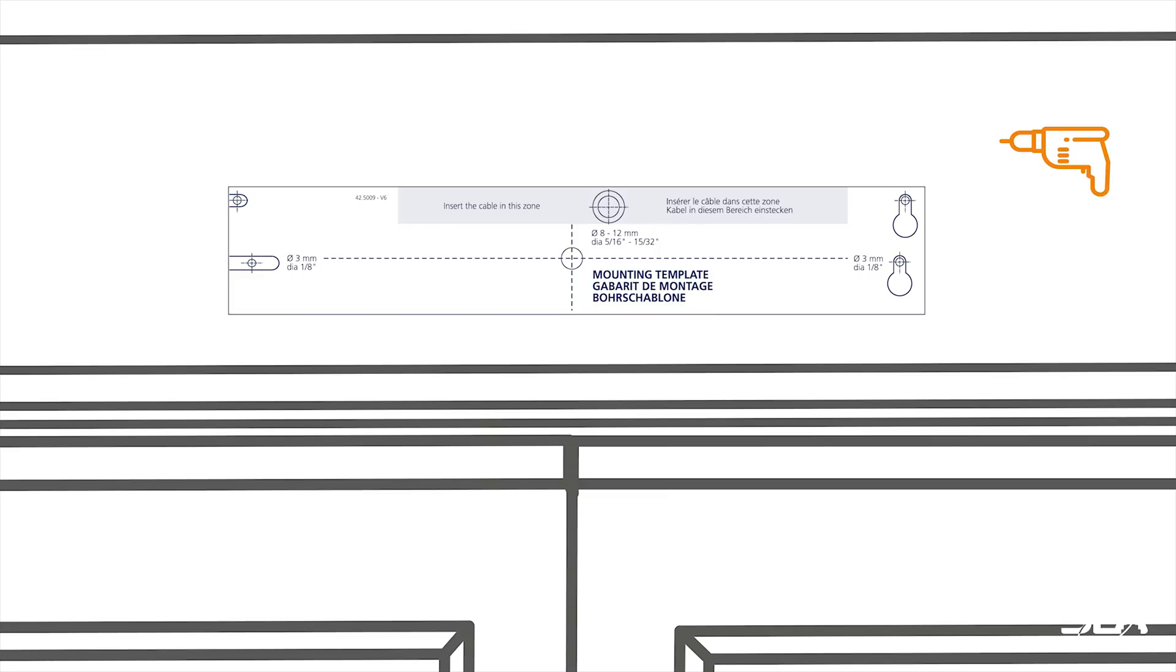Drill two holes for the fixation screws. Choose between the lower or upper indications. Drill one hole with a diameter of max 12 mm to pass the cable.